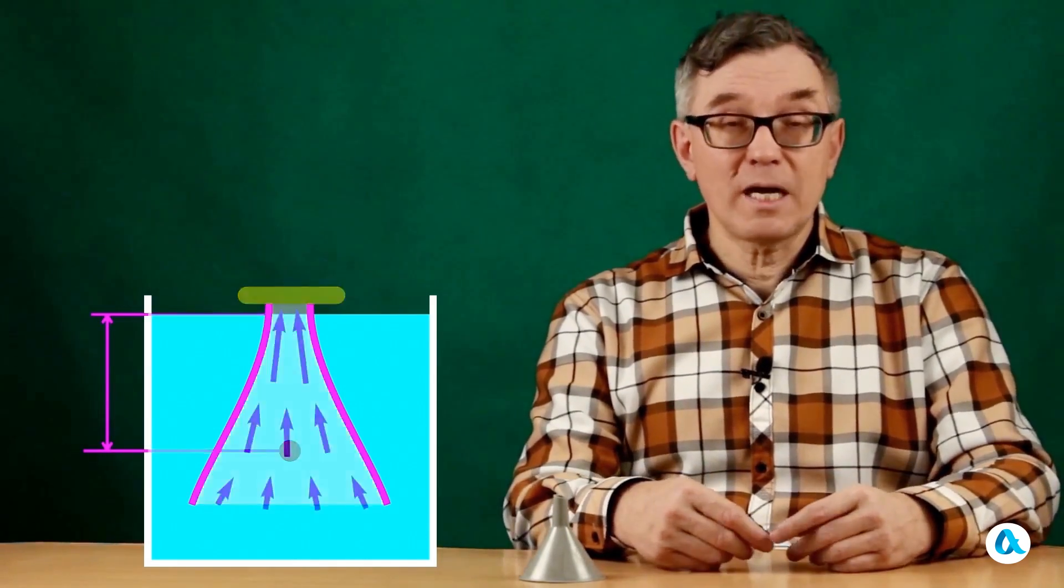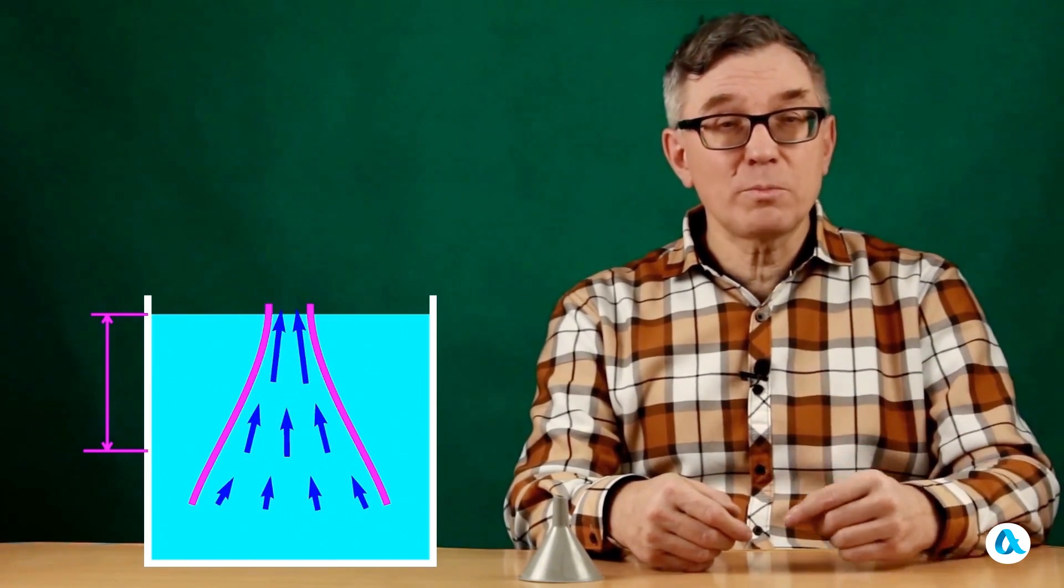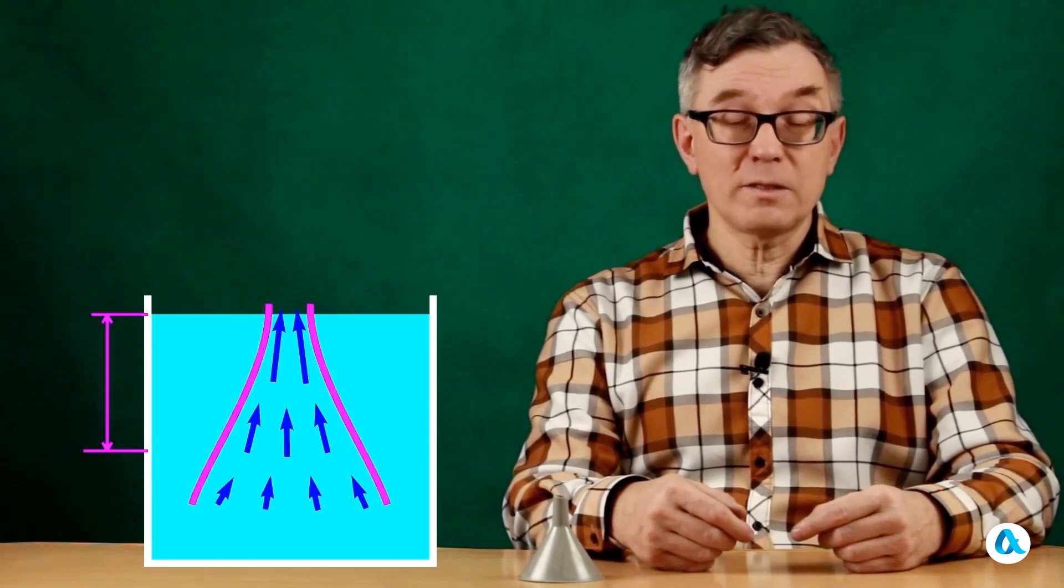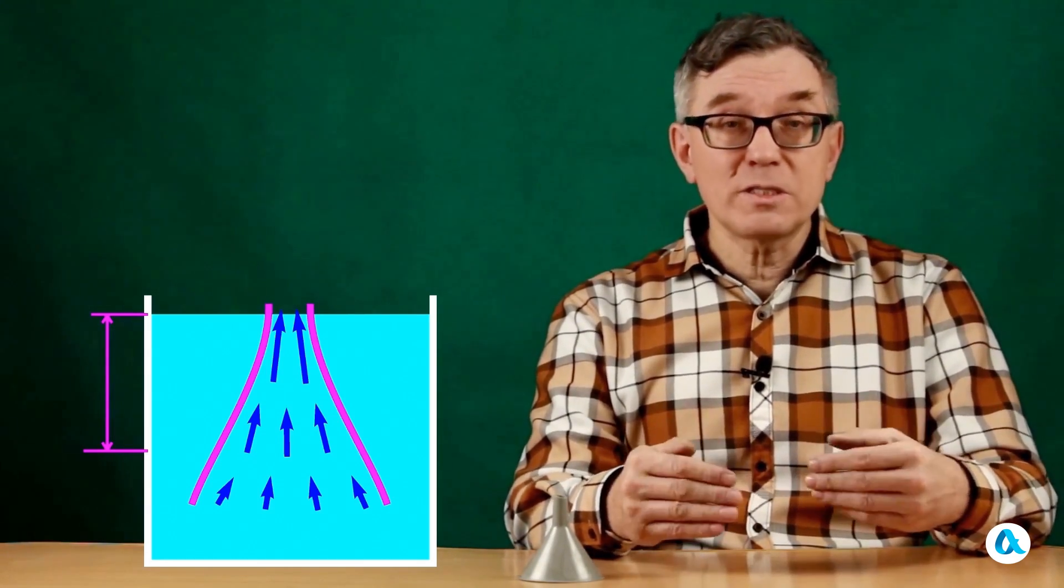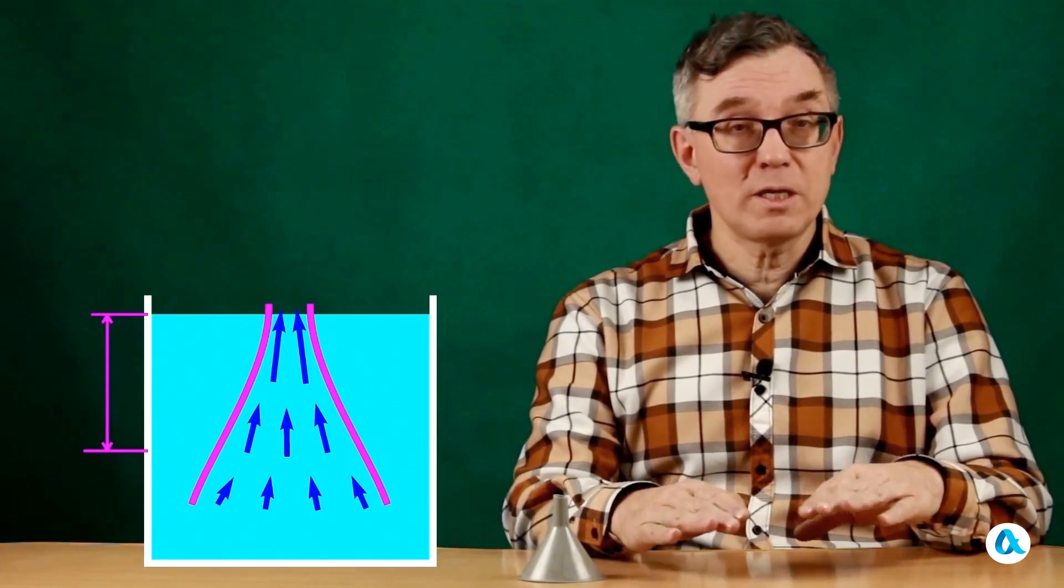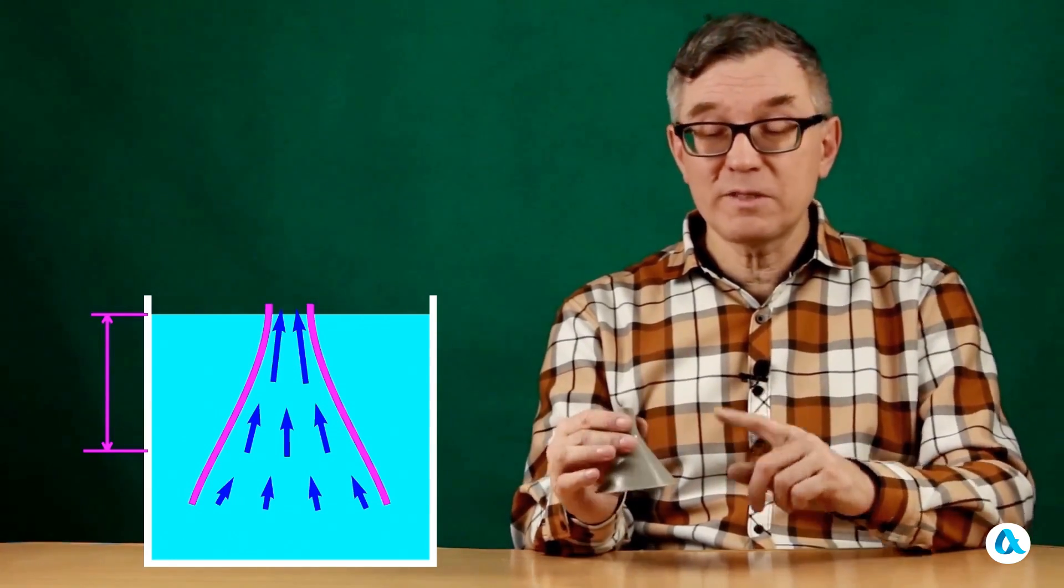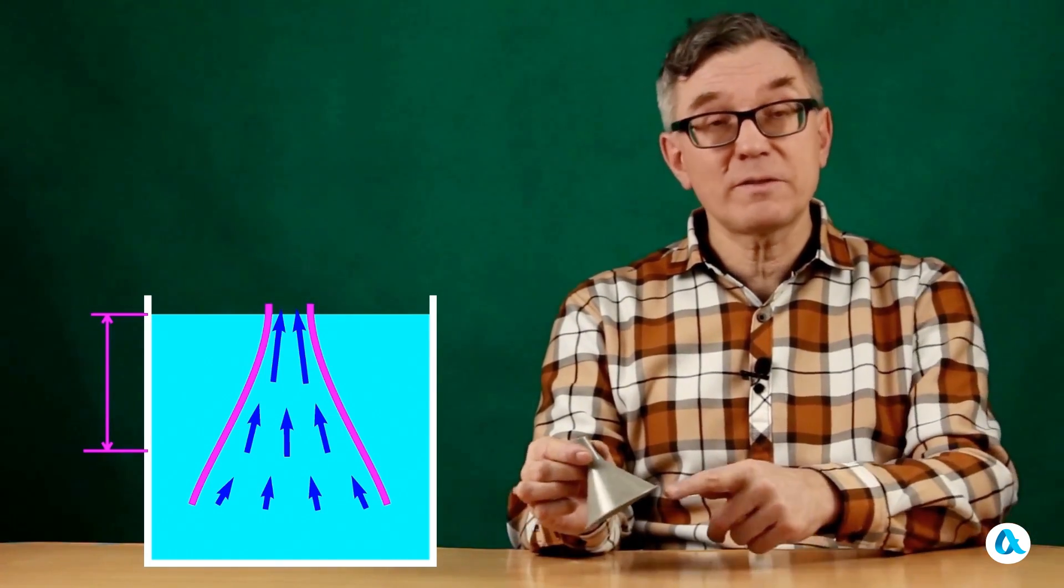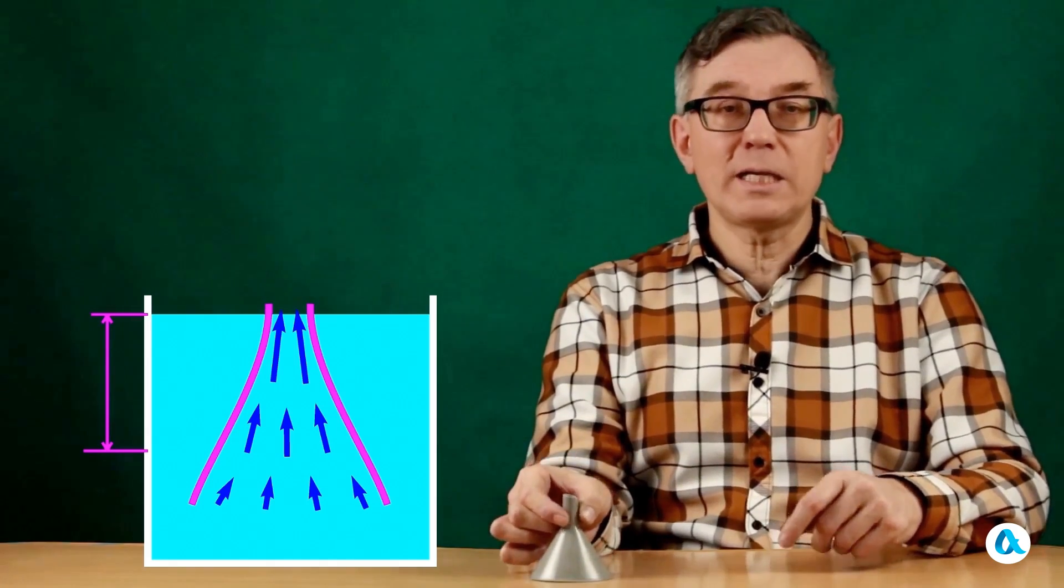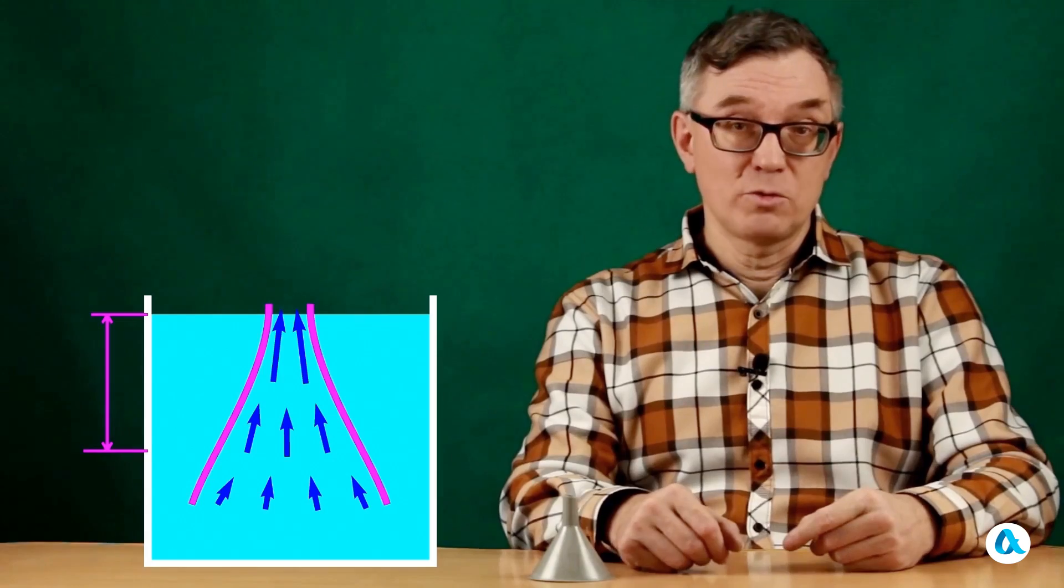And when I open the neck the water rushes inside the funnel and in accordance with the principle of continuity, the speed of the water increases in proportion to the decrease in the cross sectional area. This funnel has an input cross section area 50 times larger than the output. This means that the speed at the output is 50 times greater than the speed at the input and the square of the speed is 2500 times greater.